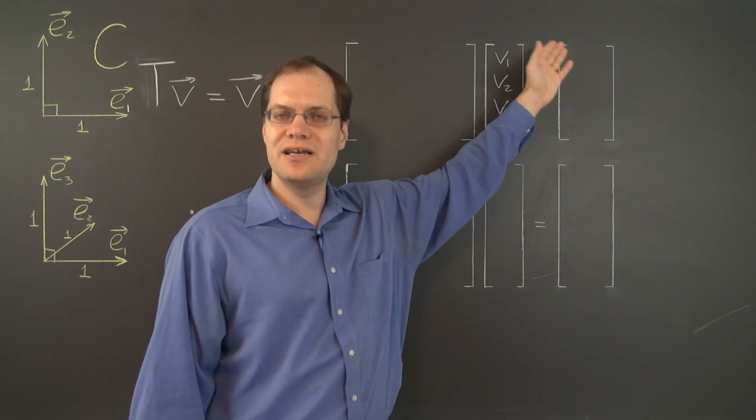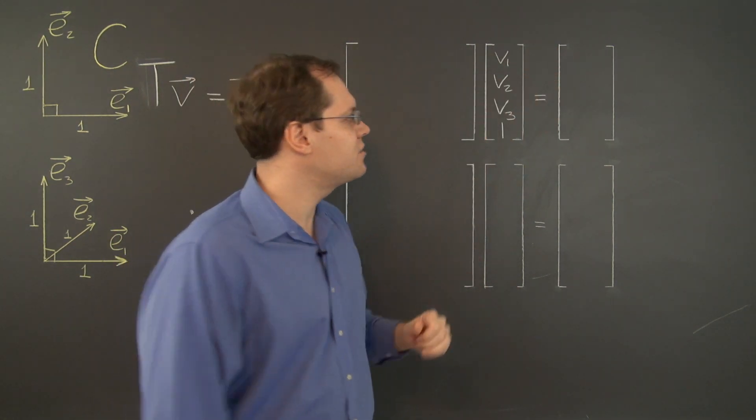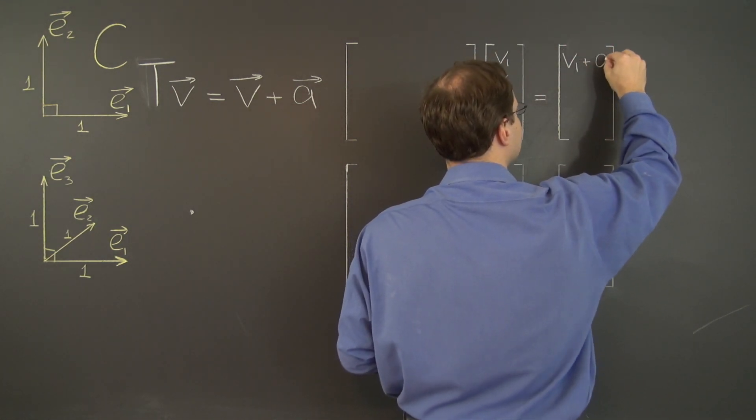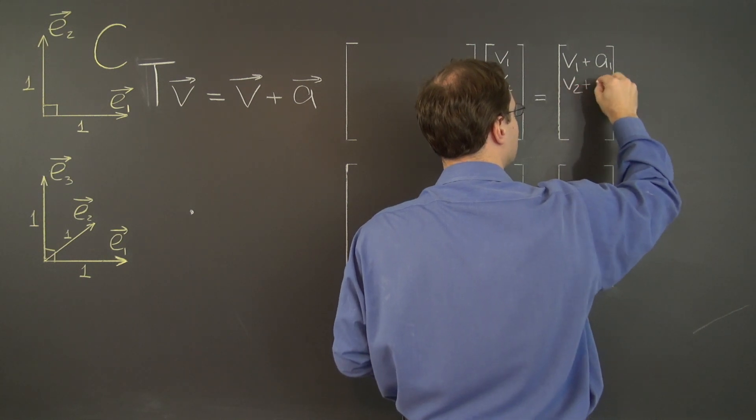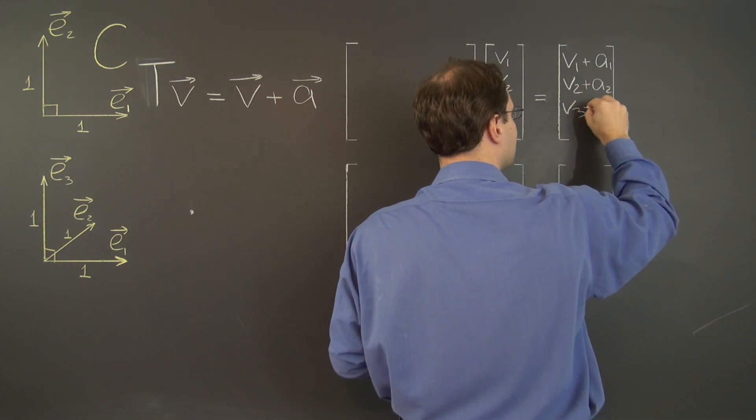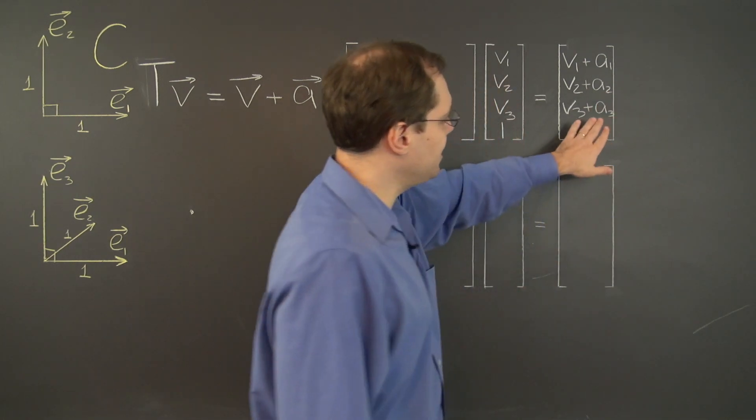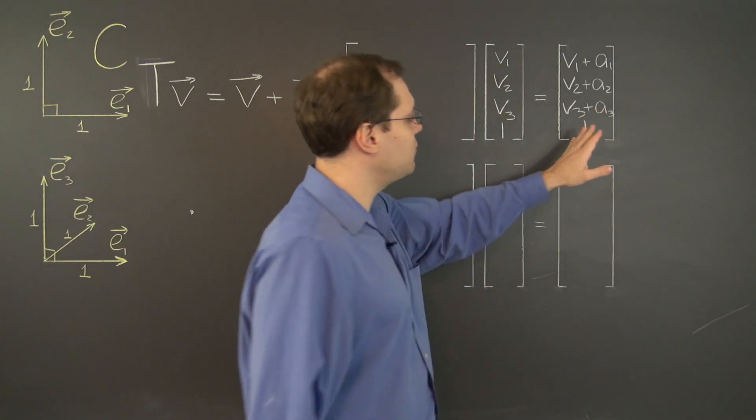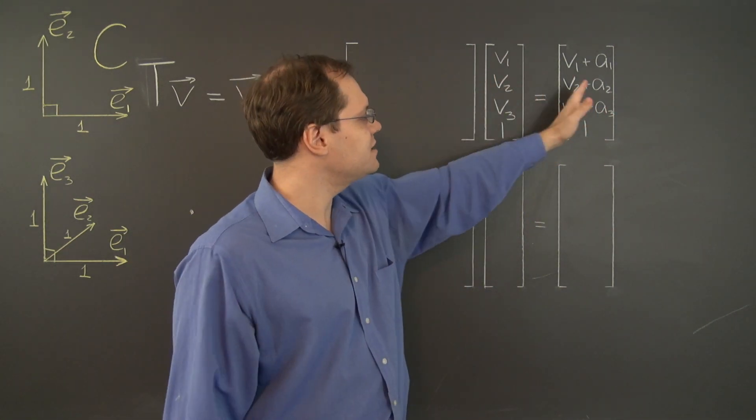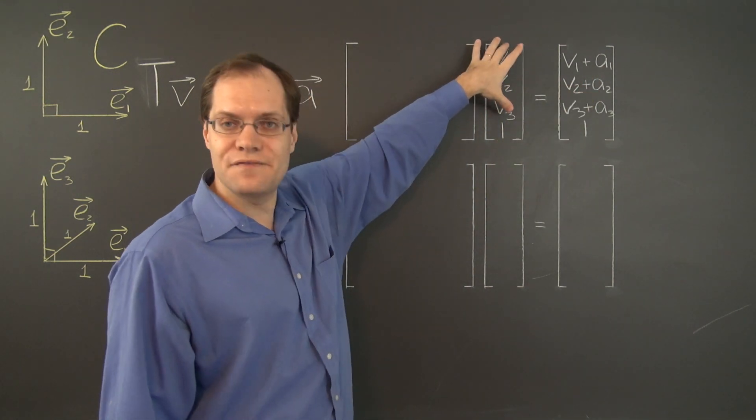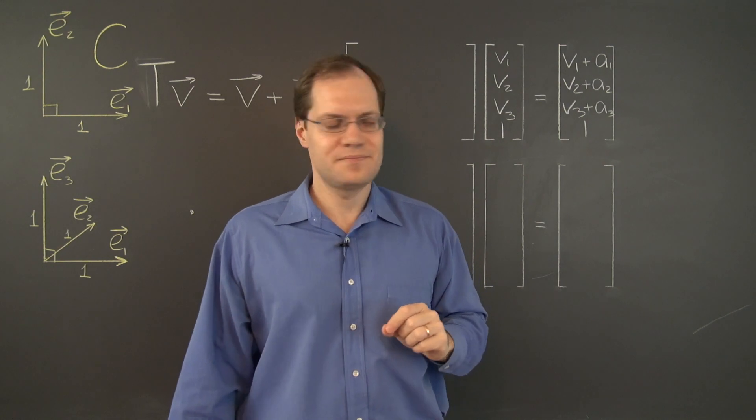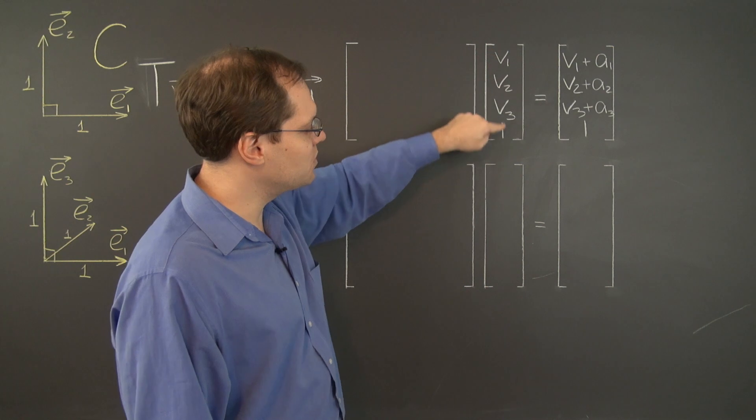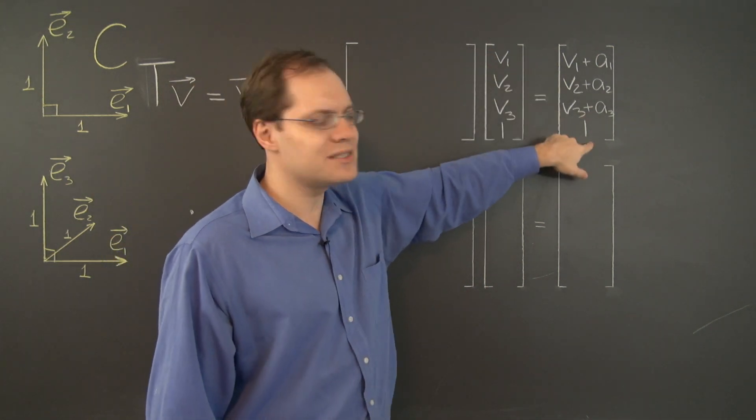So what is this vector translated? Well, of course, it's V1 plus A1, V2 plus A2, and V3 plus A3. So let's write down the desired result. We're going to have V1 plus A1, V2 plus A2, V3 plus A3. And we don't really care what ends up here, but it will work out that it's a 1. And in fact, it's good to have a 1 so that we agree that all of these augmented vectors have the vector itself in the first three entries and then a 1. Okay. So we need now to come up with a matrix such that when applied to this vector produces this vector.